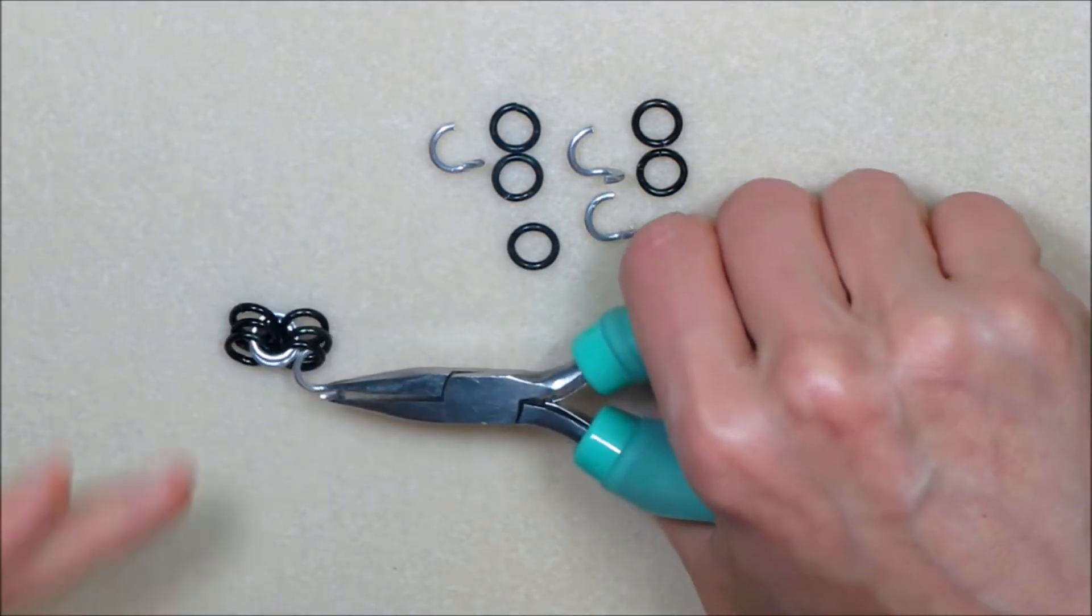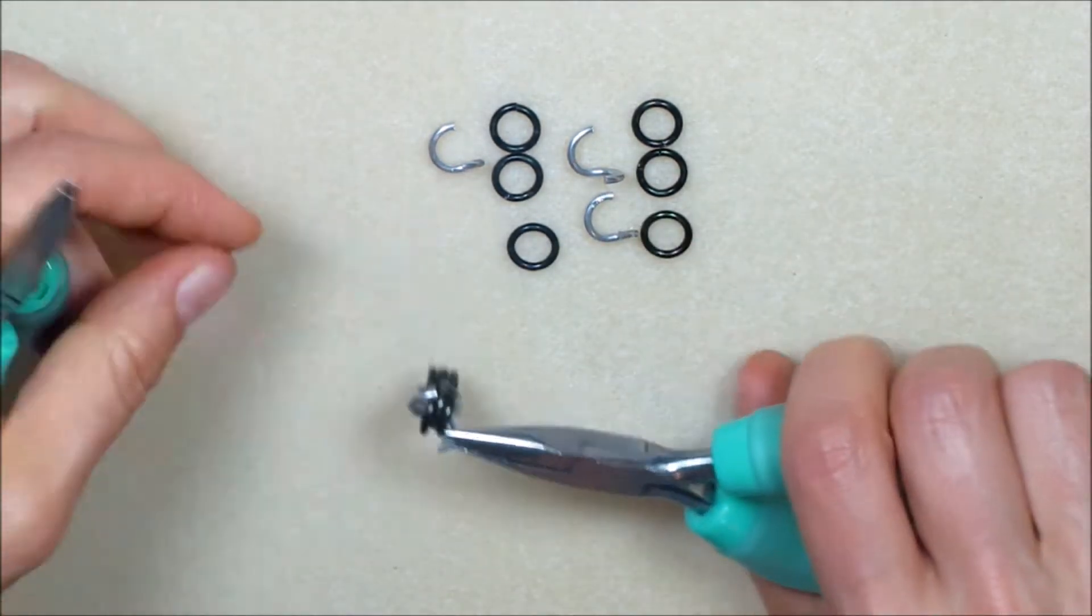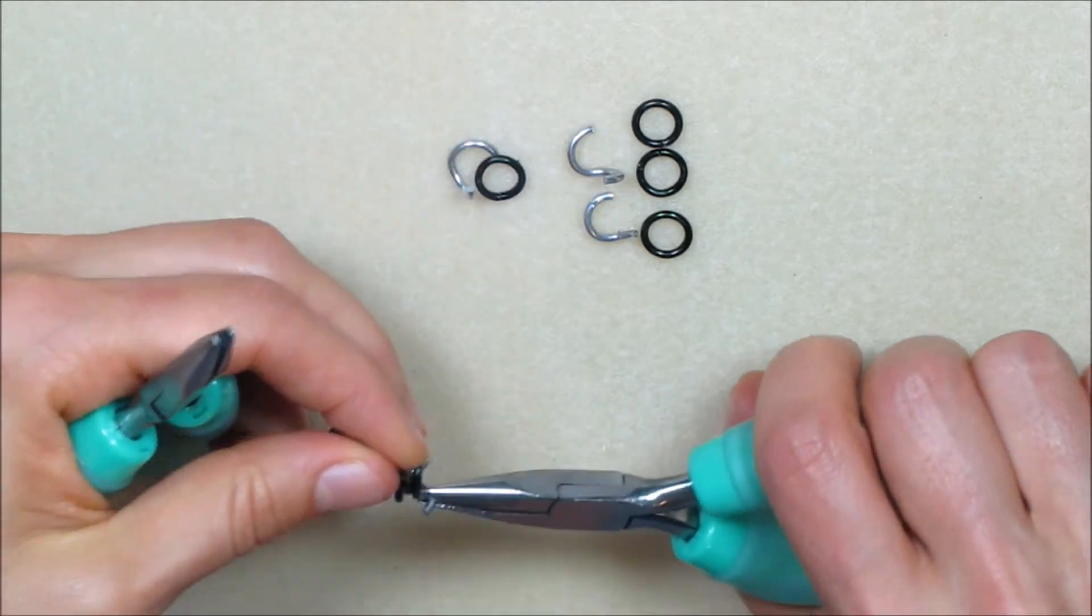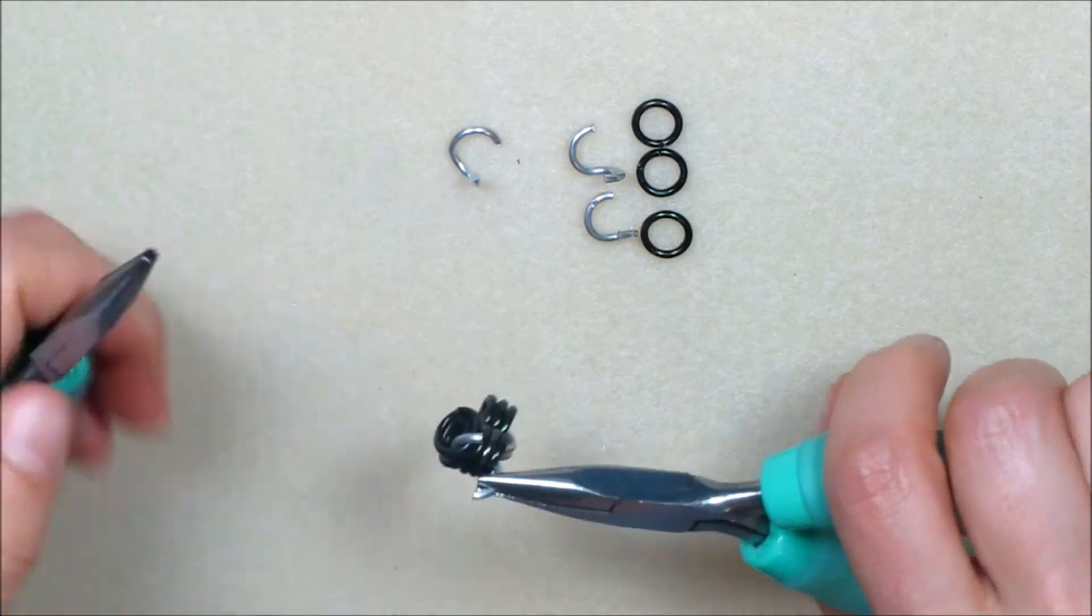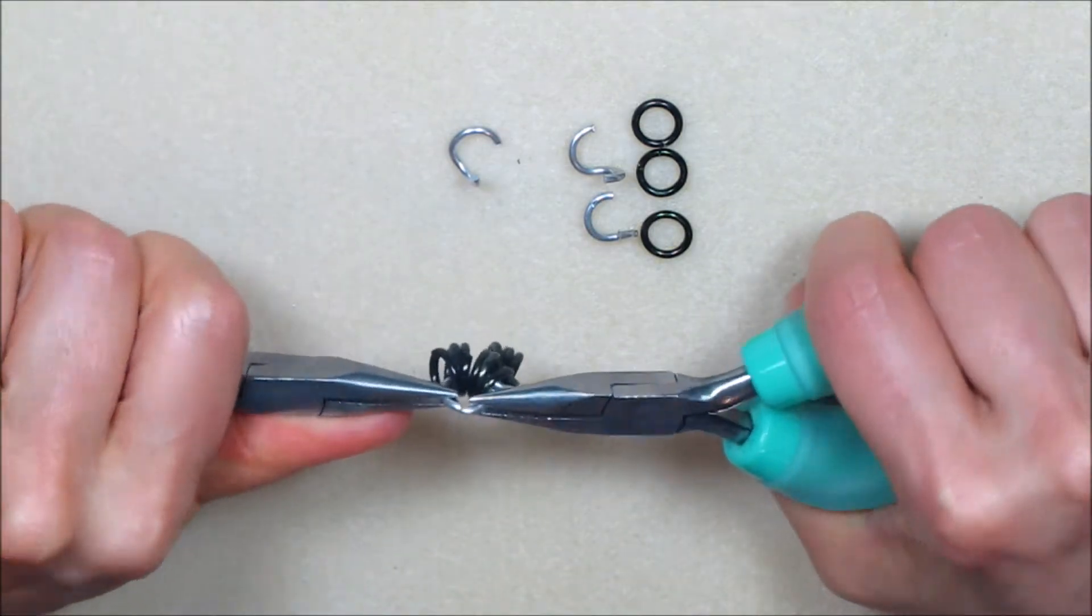Pick up one of the inner rings from set 2. Run it through all three of the most recently added rings. Before closing, place all three of the rings from outer set 3 on the open inner ring.